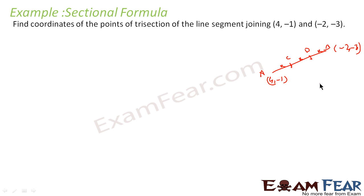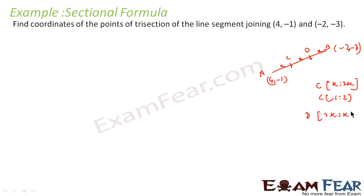Point C divides the line in ratio k to 2k, that is 1 to 2. Point D divides the line in ratio 2k to k, that is 2 to 1. So let us find point C, which divides in ratio 1 is to 2.